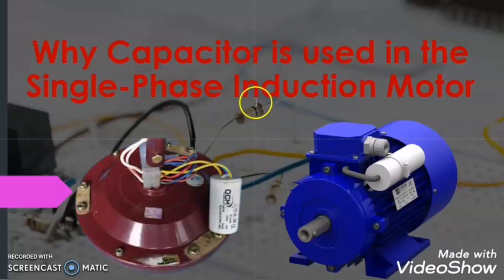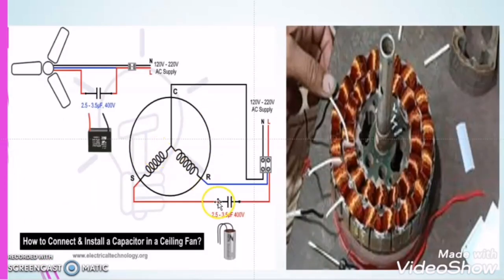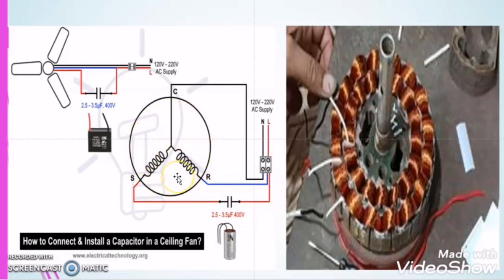So our topic was: why do we use a capacitor in a single phase induction motor? The simple answer is that the single phase induction motor is not a self-starting machine, so we need the capacitor to start it. In depth, we are using the capacitor to develop phase displacement — to create another phase from the single phase with a phase displacement of 90 degrees — so that the rotating magnetic field develops and rotates the motor.